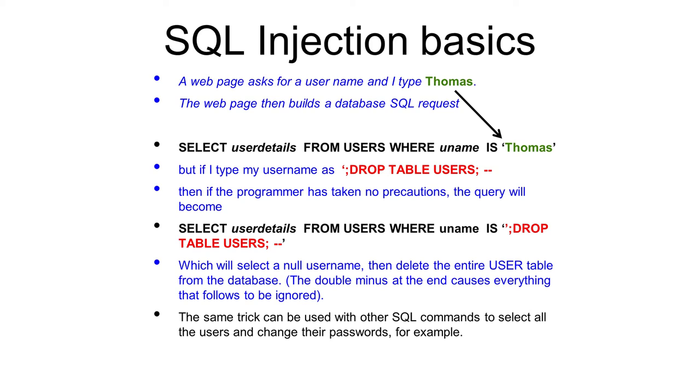But what's it done? It's dropped the user table — in other words, it's deleted that table from the database. This simple example just destroys the database. You can see that you can use other SQL commands to carry out other actions on the database, for example selecting all users and gaining their information and having it displayed or copied, or changing everybody's passwords.